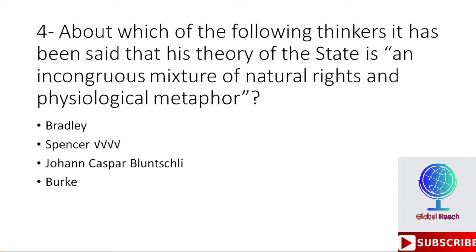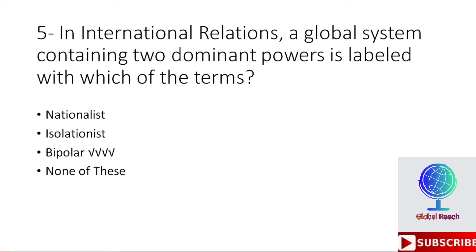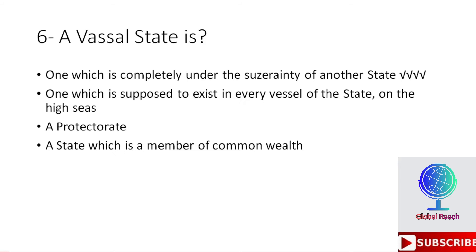Fifth MCQ: In international relations, a global system containing two dominant powers is labeled with which term? Options are nationalist, isolationist, bipolar, none of these. The correct option is bipolar. In international relations, the global system containing two dominant powers is labeled as a bipolar system.